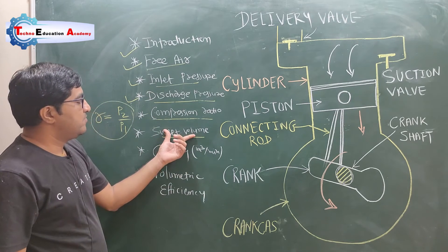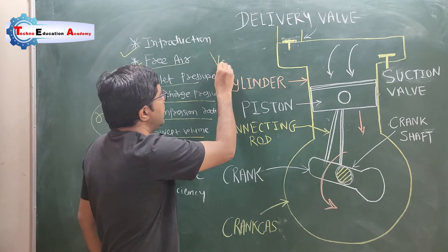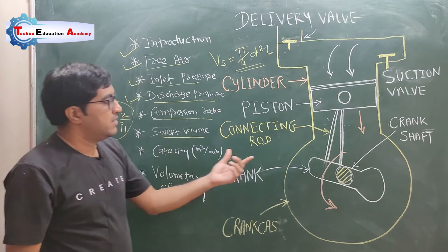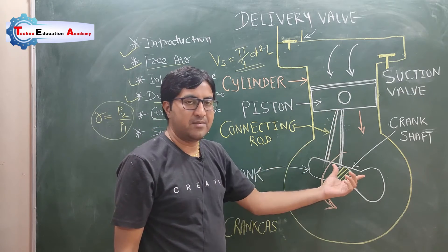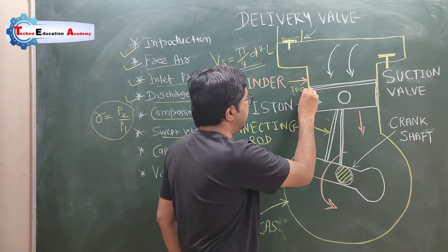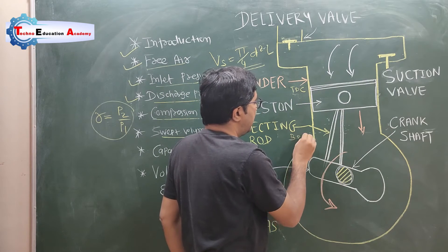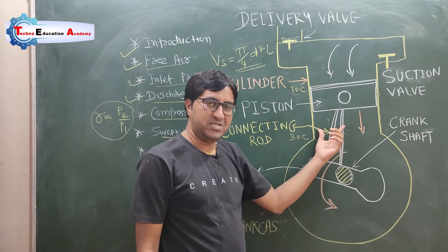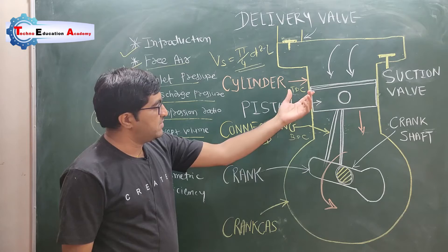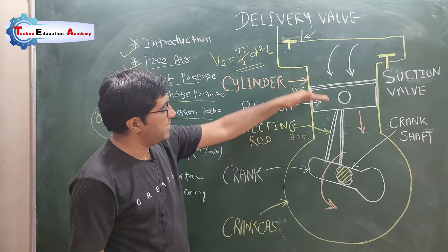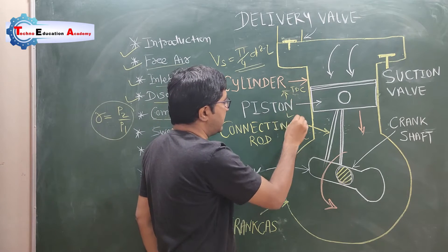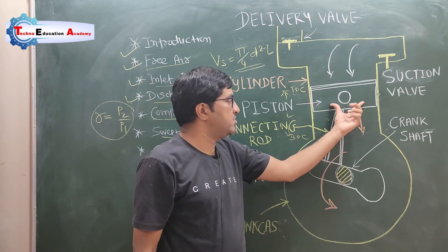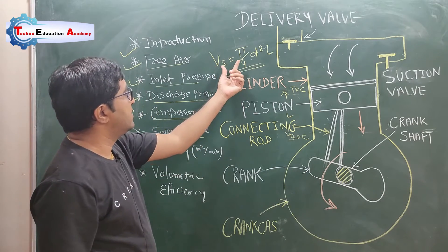The next term is swept volume. The equation of swept volume is Vs = (π/4) × B² × L. Swept volume means it is the volume of the cylinder whenever the piston travels from TDC (top dead center) to BDC (bottom dead center). TDC is the topmost position of the piston inside the cylinder, and BDC is the bottommost position. Whenever the piston travels from one dead center to another, it travels a stroke length L, and the volume covered by the piston is called swept volume.